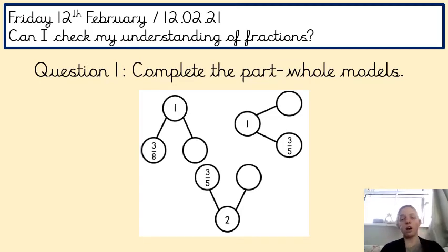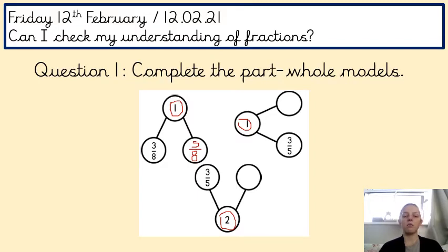Question one is asking you to complete the part-whole models. You've got here one whole one, another whole one, and two whole ones. You need to figure out what goes in the missing circle for the part-whole. If I've got three-eighths, how many do I need to get one whole one? You're going to do your fraction, you'll write your eight underneath. What do you have to add to three to get to eight? Five-eighths. So it'd be five-eighths and three-eighths make one whole one.